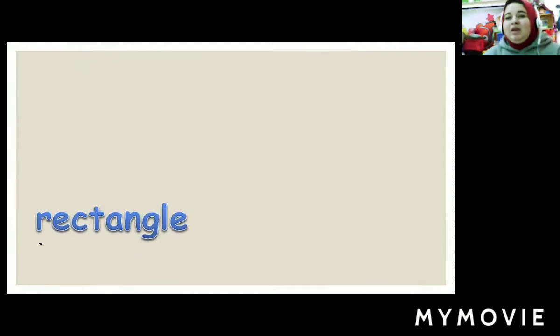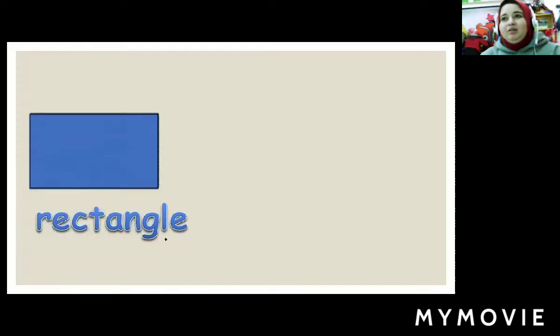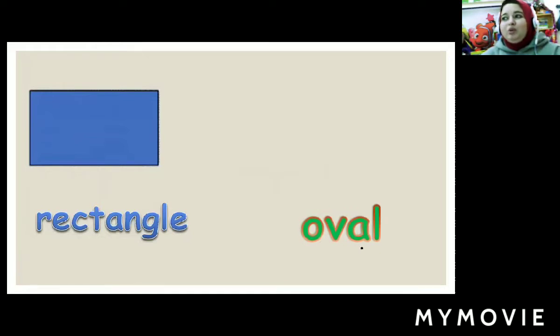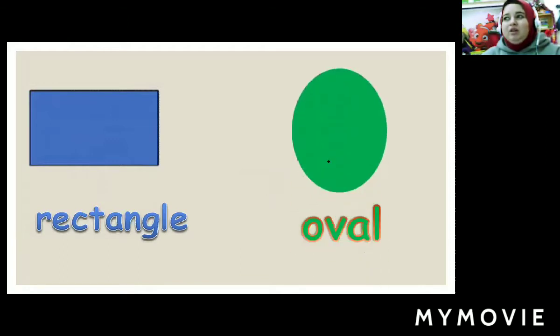And what's this word? KG1, what is this word? Rectangle. Rectangle shape. And what's this word? Oval. Oval.